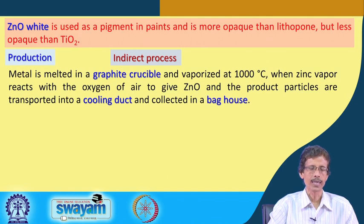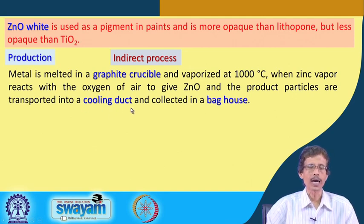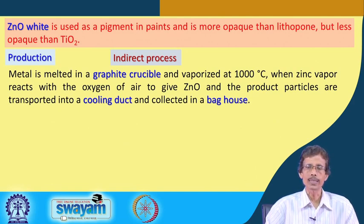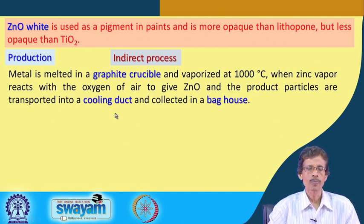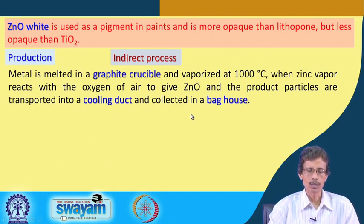In the vapor state, zinc vapor reacts with dioxygen to form zinc oxide. The product is carried through a duct away from the high-temperature reaction zone into a cooling duct, and is finally collected in a bag-type area known as a bag house.